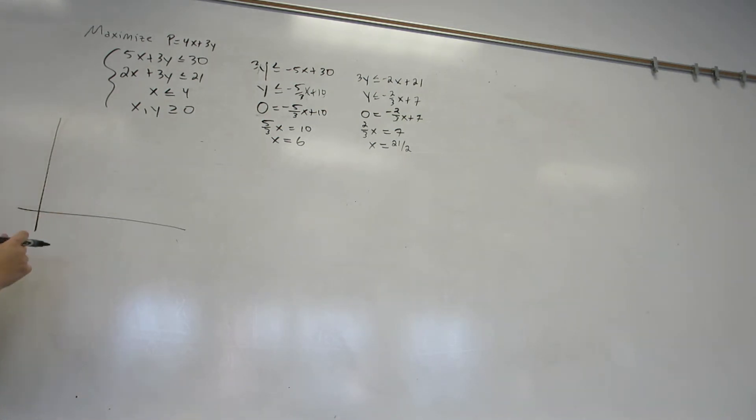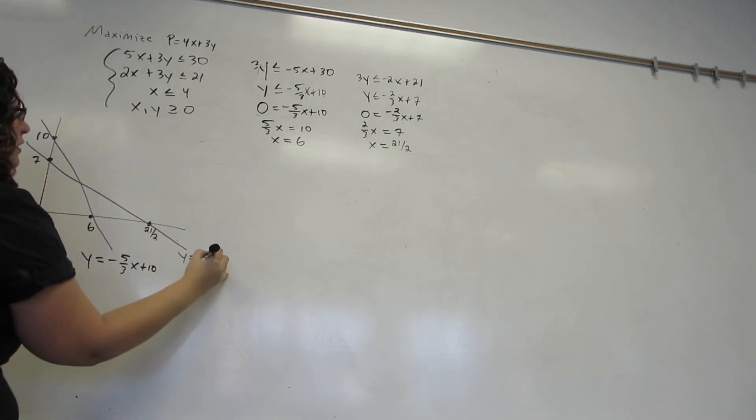So my first line has a y-intercept of 10 and an x-intercept of 6. This is the line y equals minus 5 thirds x plus 10. My next line has a y-intercept of 7 and an x-intercept of 21 halves. This is the line y equals minus 2 thirds x plus 7.